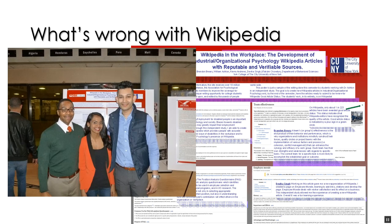Nothing is wrong with Wikipedia. In fact, I have a standing independent study, Psych 430, where if you want to do an independent study and edit Wikipedia, you can do it. There is the Wikipedia psychology initiative, which is an initiative of psychologists and psychology professors across the world devoted to expanding and improving articles on Wikipedia about psychology, and we work with that project. I would not be doing this project if there was something intrinsically wrong or incorrect or unethical about Wikipedia.